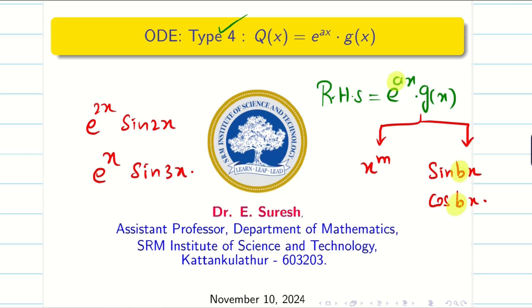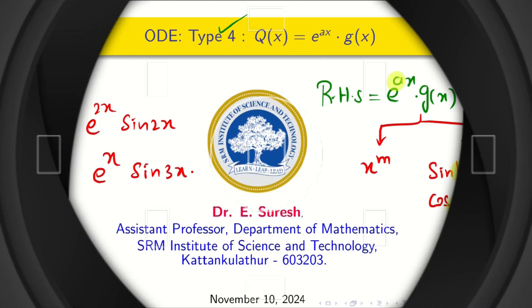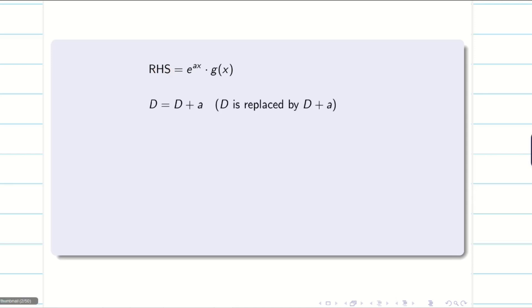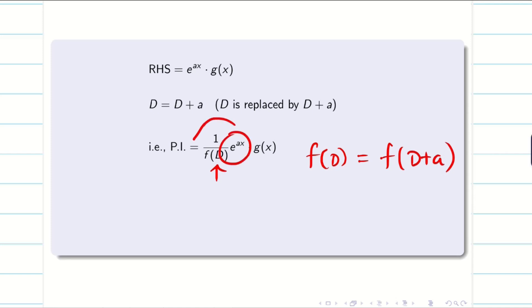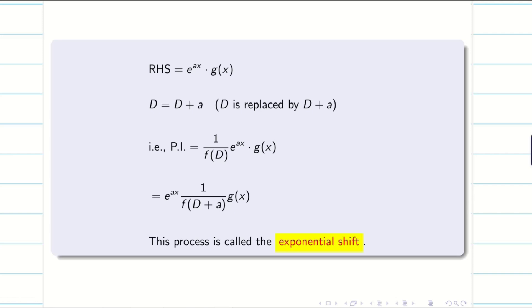How to solve Type 4? If your RHS is e^(ax)·g(x), then d is replaced by d plus a. To remove this e^(ax), we do d replaced by d plus a. Once the function f(d) is replaced by f(d+a), we move the e^(ax) to the left hand side because its job is over. This is known as the exponential shift.